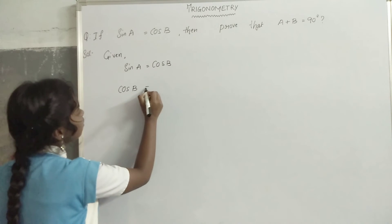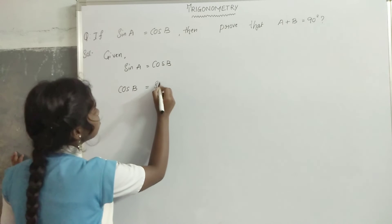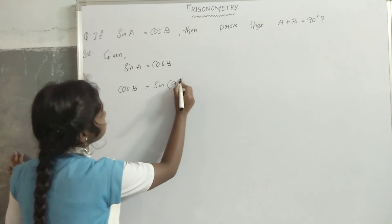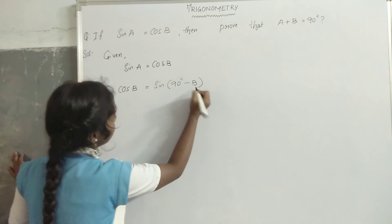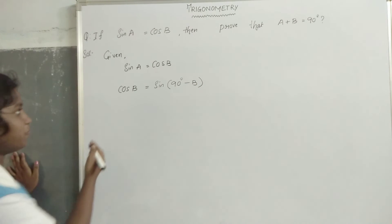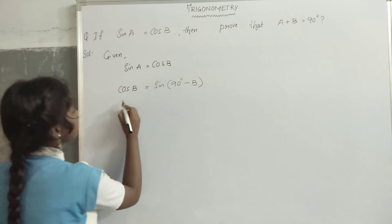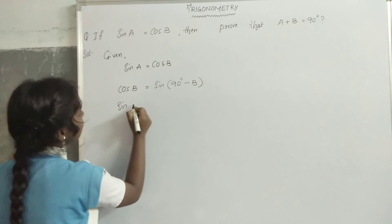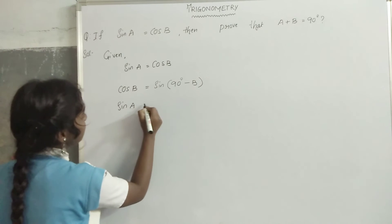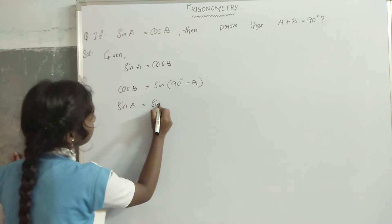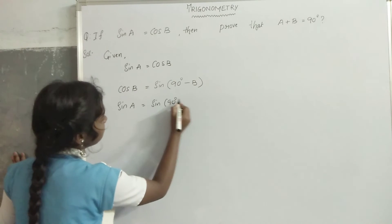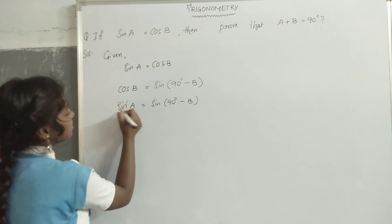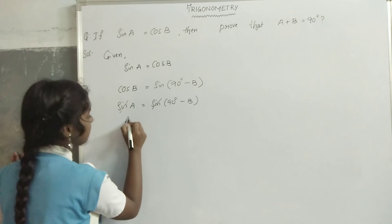We know that cos b is equal to sin(90 degrees minus b). We got the value of cos b. Here, replace the values: sin a is equal to sin(90 degrees minus b). Here, sin gets cancelled.